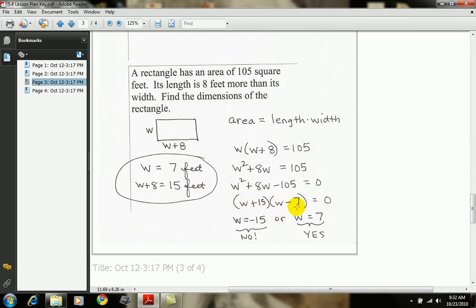This is where you do your first outer inner last to make sure it's right. If I solve these two cases, one answer gives me negative 15 and the other gives me 7. The reason I'm saying no to negative 15, I can't have a width that's a negative, so I have to eliminate that. The only correct answer for w is 7.